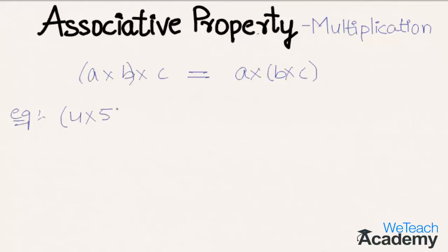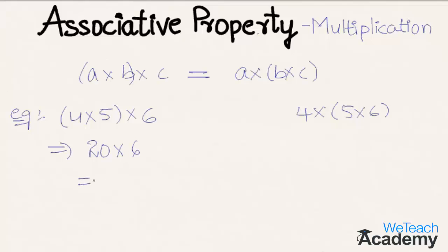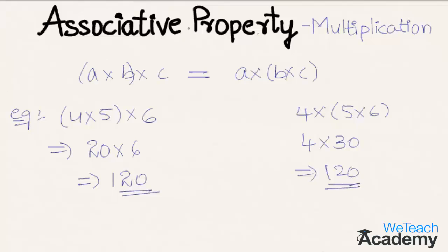Here we have (four into five) into six, and by changing the grouping we get four into (five into six). On the left hand side, four into five is twenty, and twenty into six equals one hundred twenty. On the right hand side, five into six is thirty, and four into thirty is also one hundred twenty. Since both values are equal, associative property of multiplication can be represented as (a into b) into c equals a into (b into c). Associative property of multiplication is a closed operation.